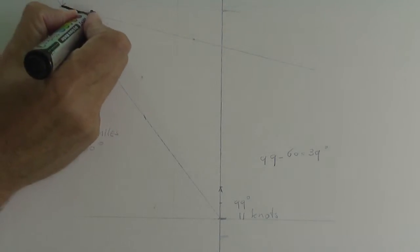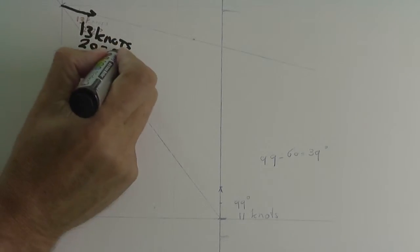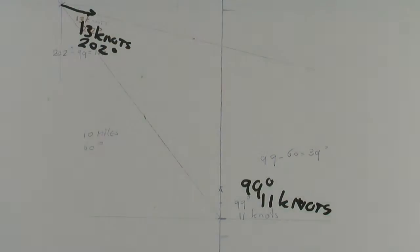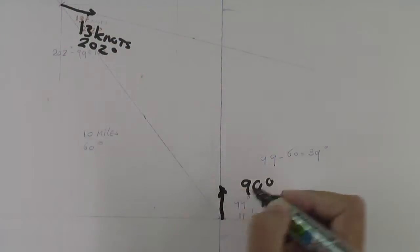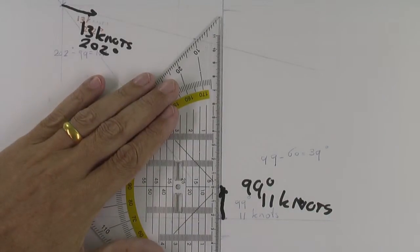We put everything in scale here so the 10 miles is 20 centimeters. The 30 knots we just make every time 6 minutes so it will be 26 millimeters and the 11 knots will be 22 millimeters.